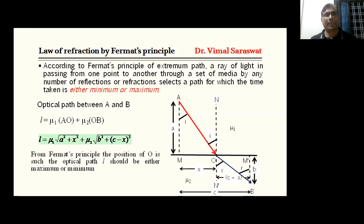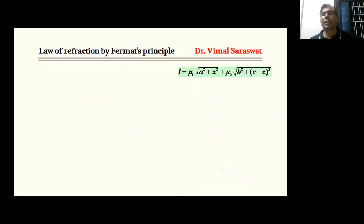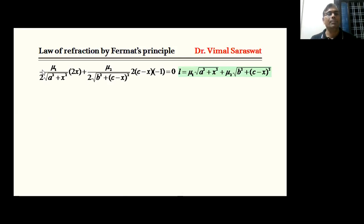From Fermat's Principle, the position of O is such that the optical path L should be either maximum or minimum. For maximum or minimum, the first differential should be zero, so dL/dx equals zero. Differentiating L with respect to x, we get Mu1 times (x / root(a² + x²)) plus Mu2 times ((c − x)(−1) / root(b² + (c − x)²)) equals zero.